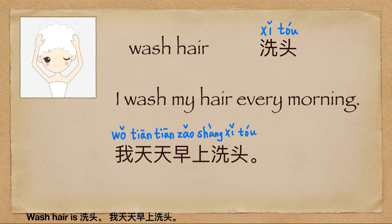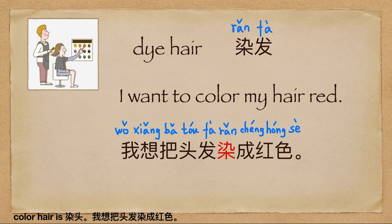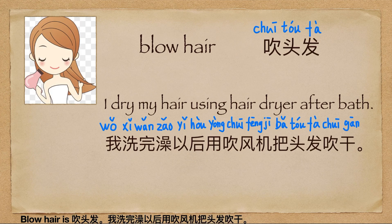Wash hair is 洗头 (xǐ tóu). 洗头，洗头，我天天早上洗头。(I wash my hair every morning.) Color hair is 染发 (rǎn fà). 染发，染发，我想把头发染成红色。(I want to dye my hair red.) Blow dry hair is 吹头发 (chuī tóufa).